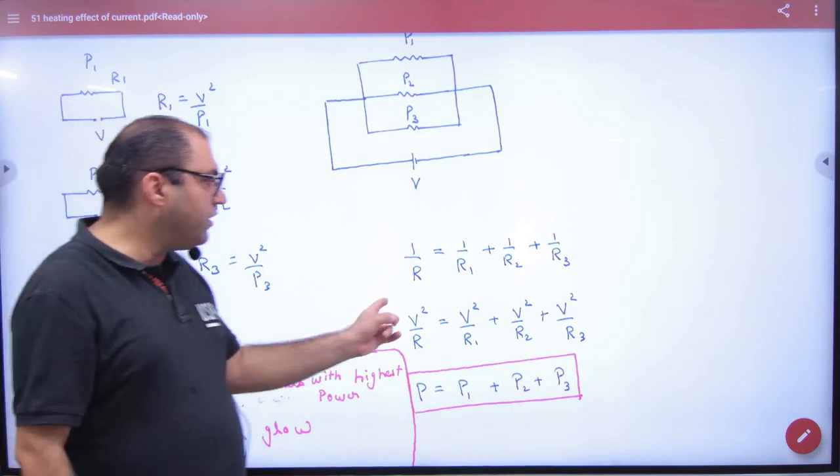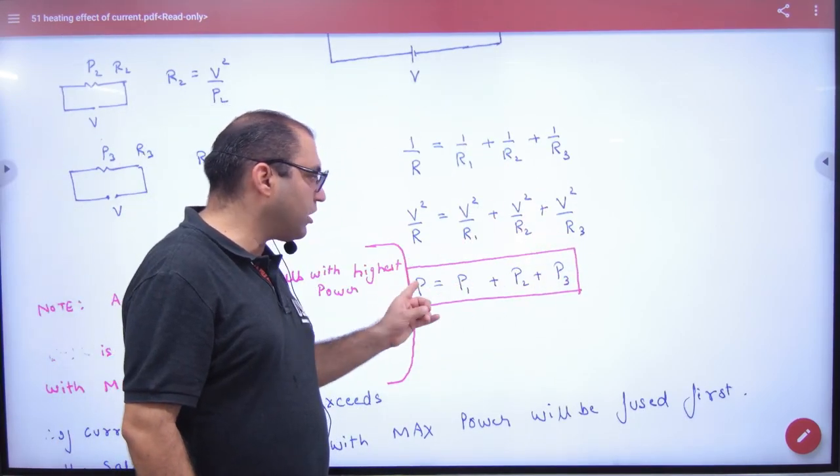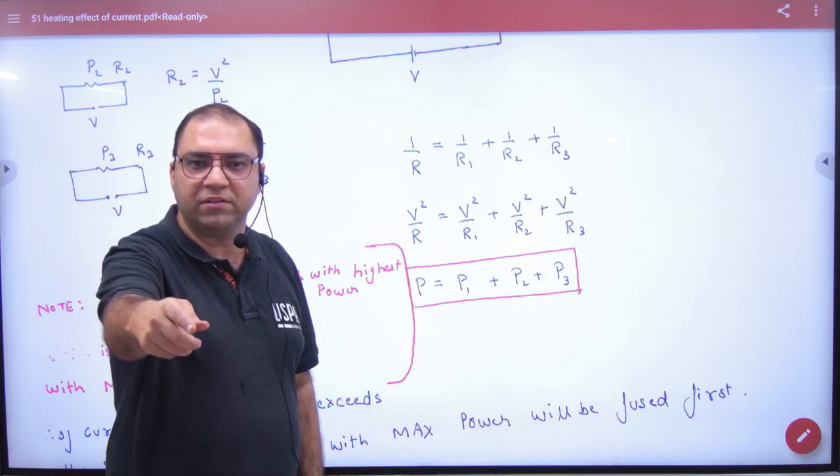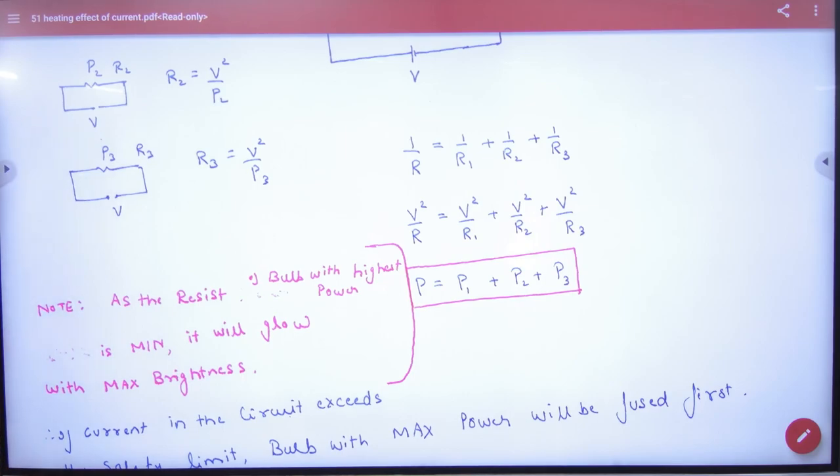You multiply it with V². So what would be power P3, P2 and P1? So P is equal to P1 plus P2 plus P3. So write in the formula. If Parallel Combination, there are 3 bulbs in parallel, then what will be P1 plus P2 plus P3. Draw in the diagram.